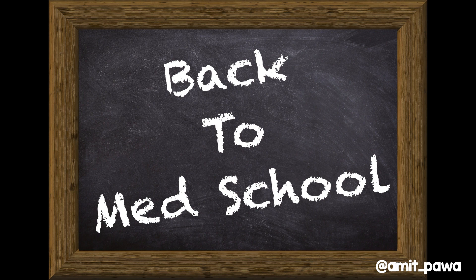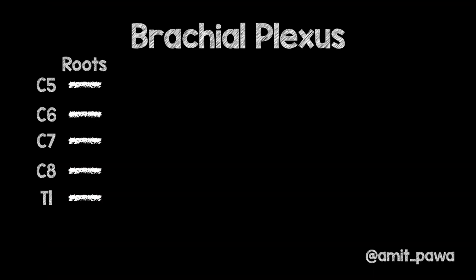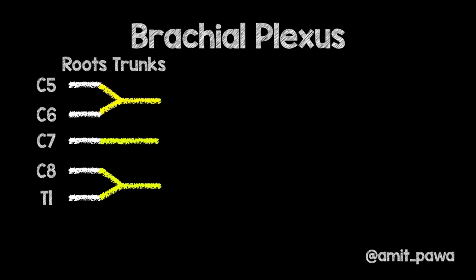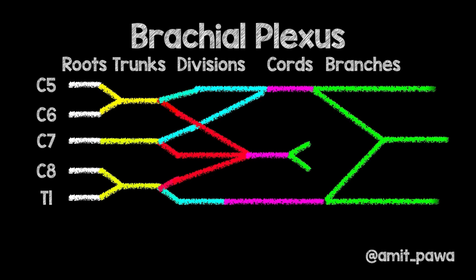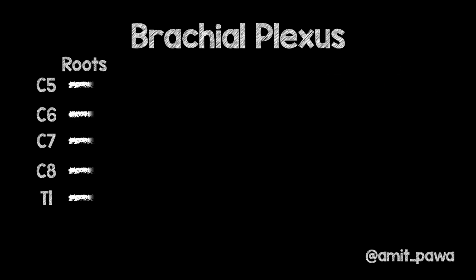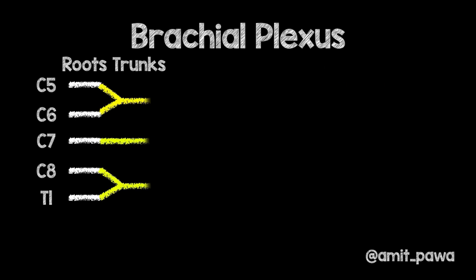Let's start off by taking a trip back to medical school, because effectively this is what we're going to be looking at. We're relating to the brachial plexus — its roots, trunks, divisions, cords and branches — and we'll go through this in a little bit more detail later.